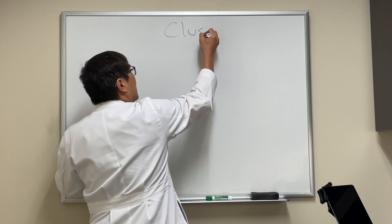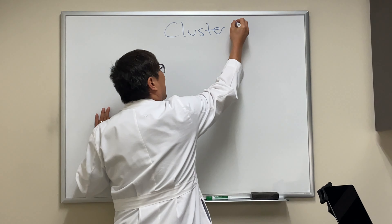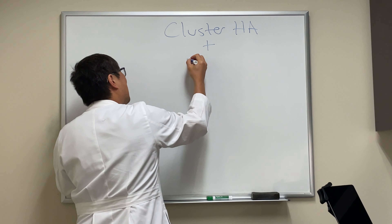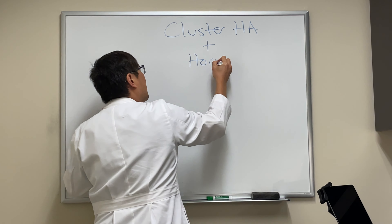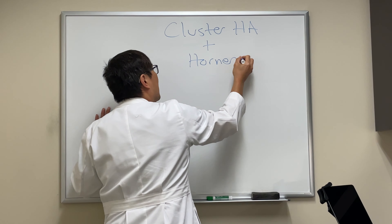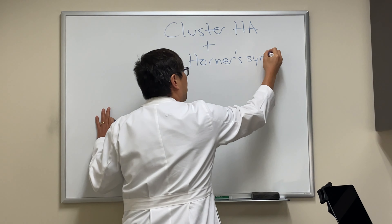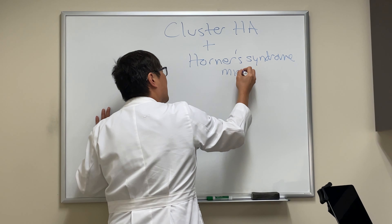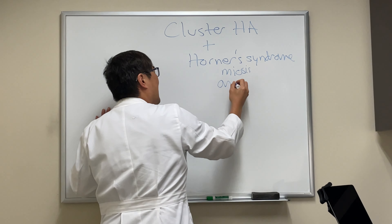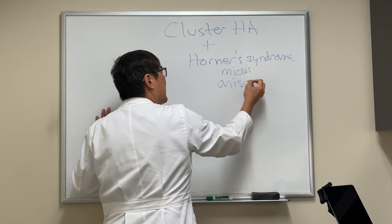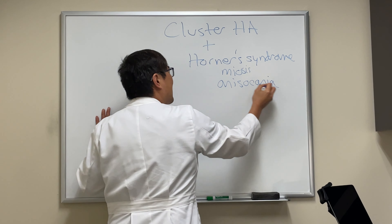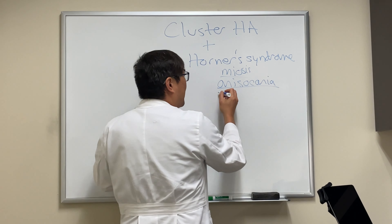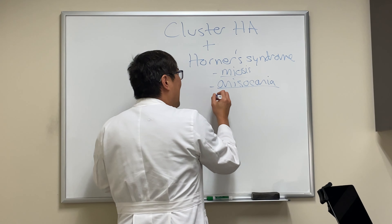Someone asked about cluster headache. Cluster headache is associated with a sign which is ipsilateral Horner syndrome, which is going to be a miosis — a smaller pupil. There's going to be anisocoria, different size pupils, and that anisocoria is going to be greater in the dark because it's a sympathetic problem.